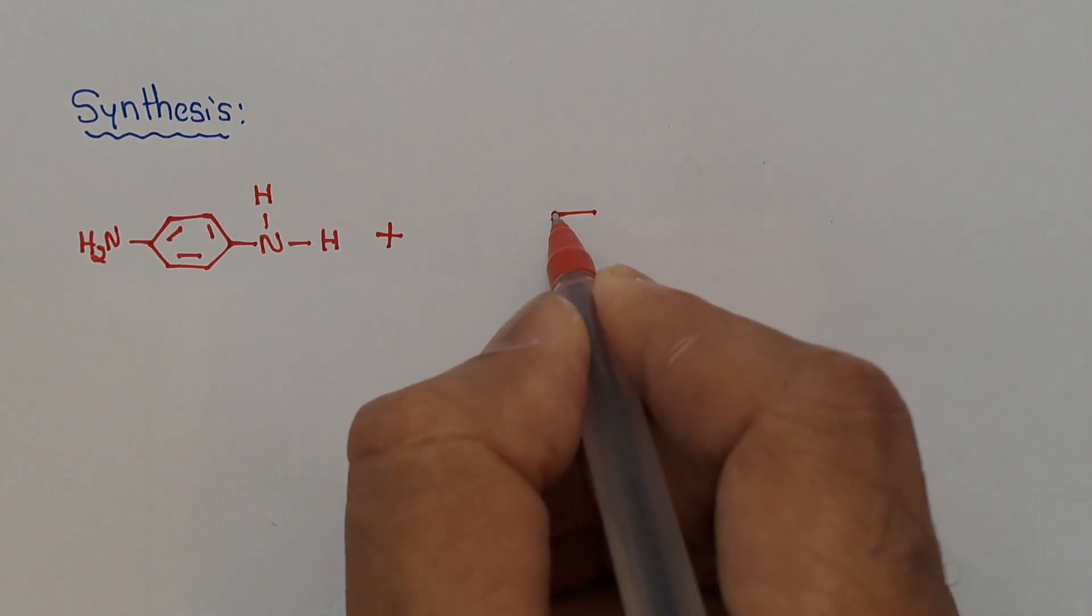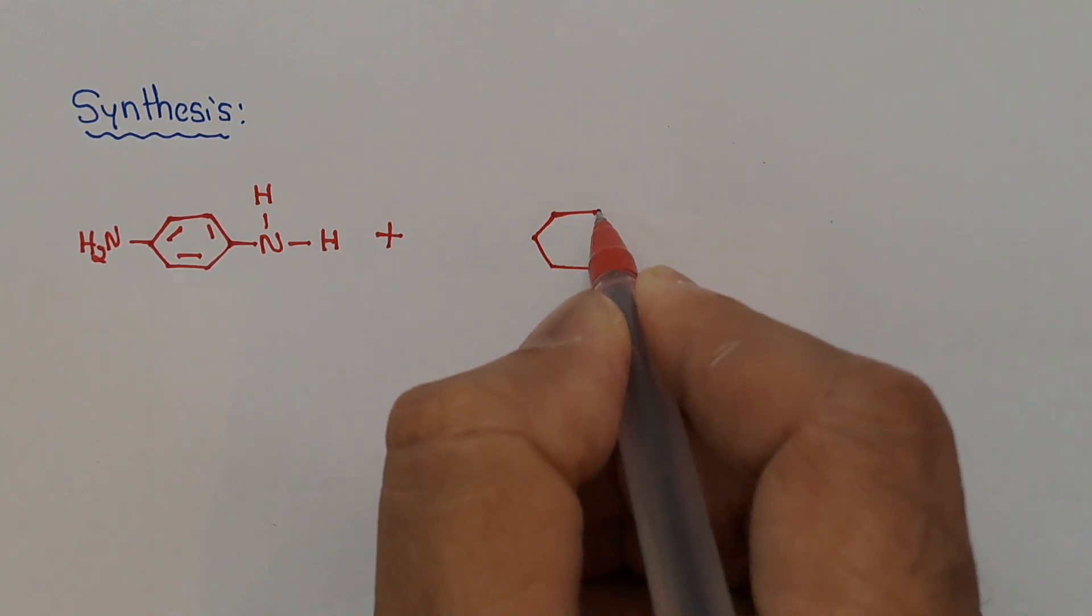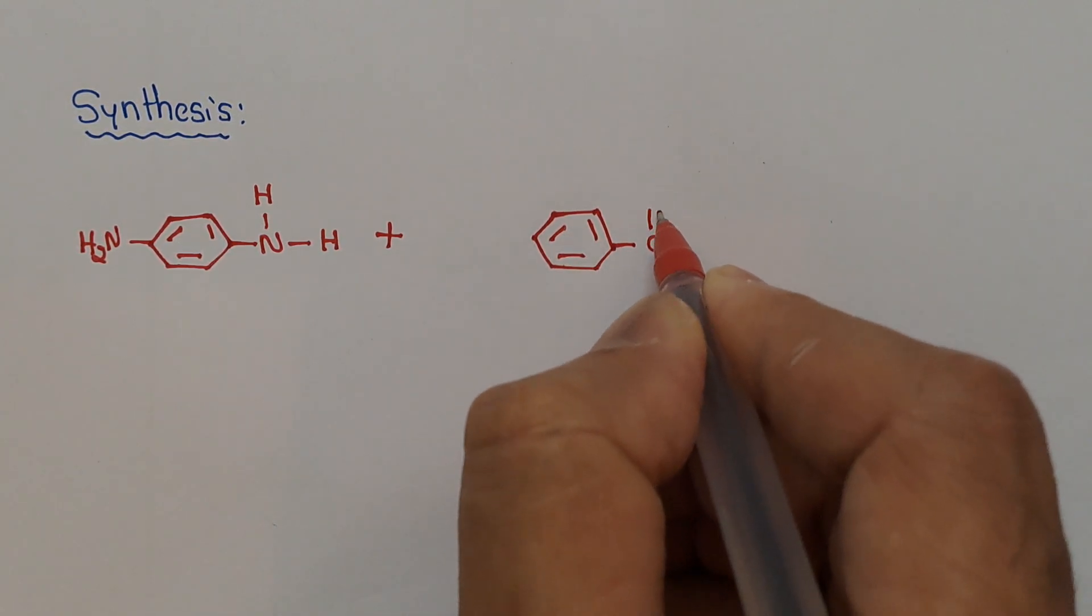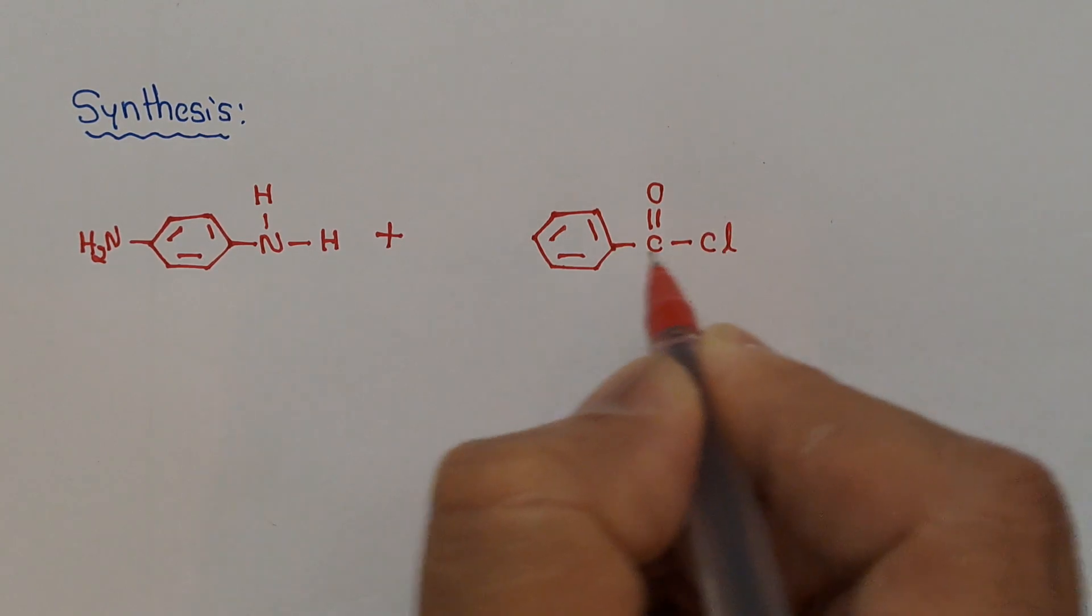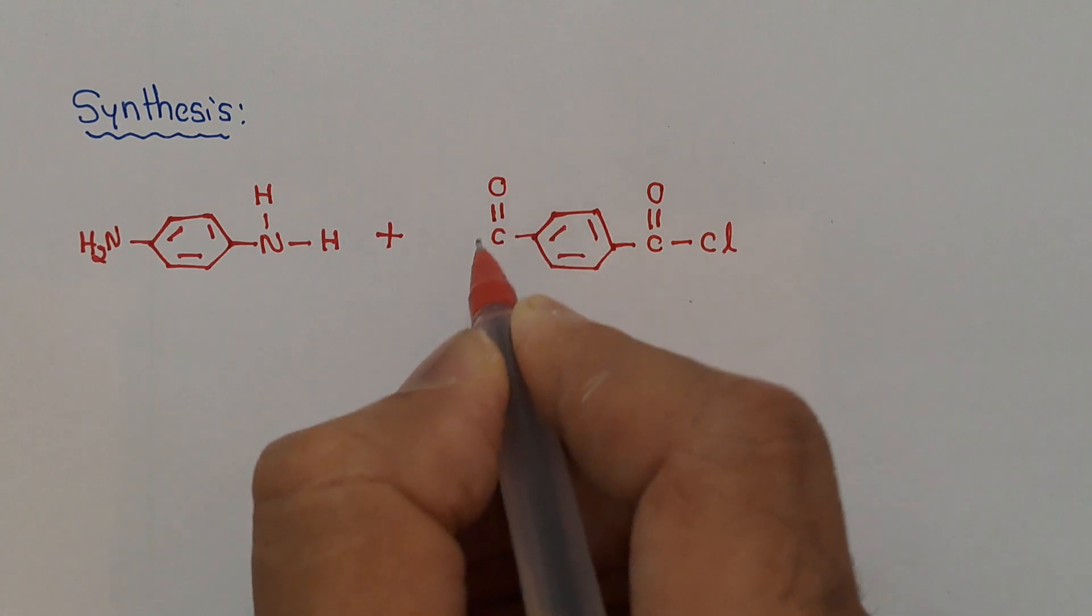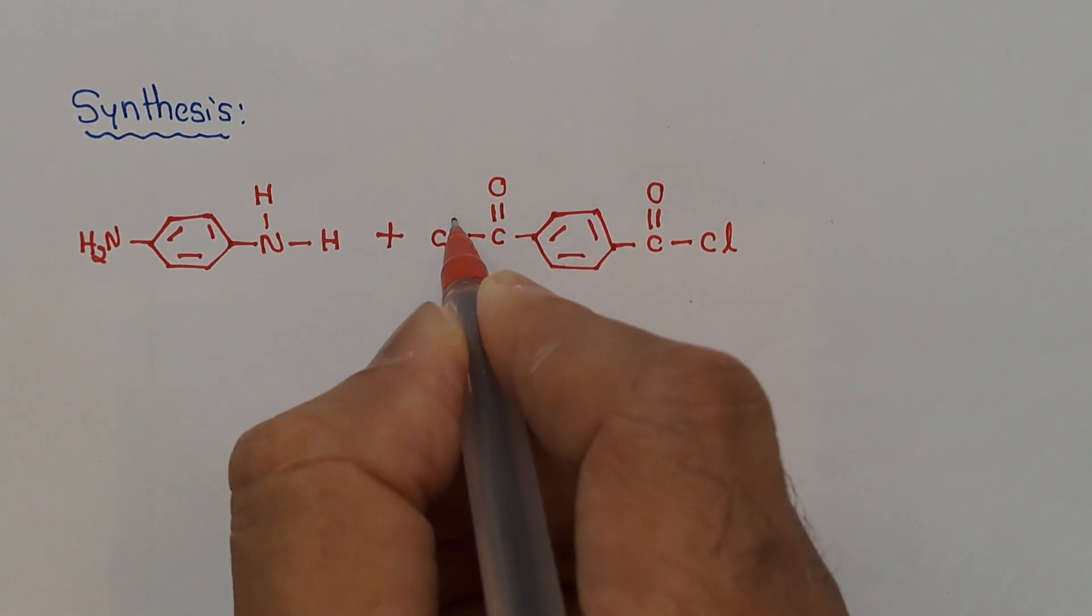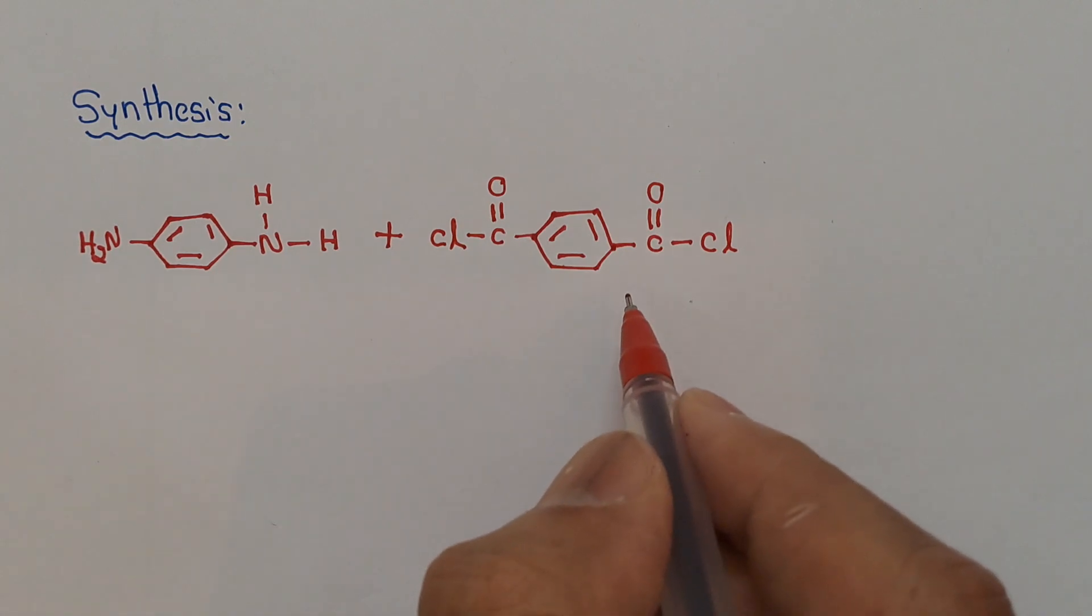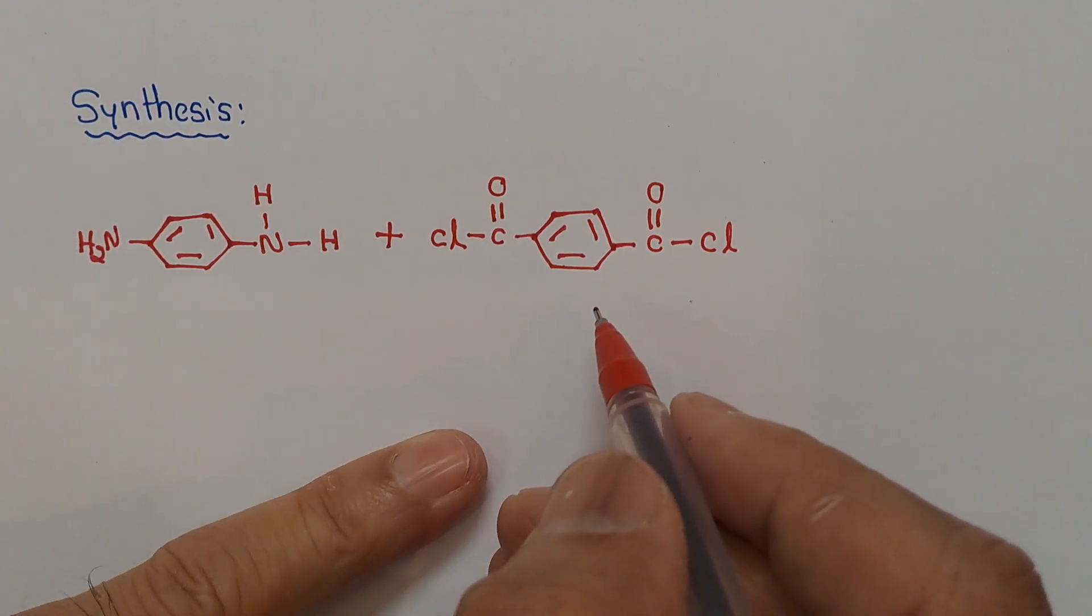It also contains a benzene ring. At positions 1 and 4, there is an acyl chloride group, that is COCl group. This is paraphenylenediamine and this one is terephthalyl chloride.